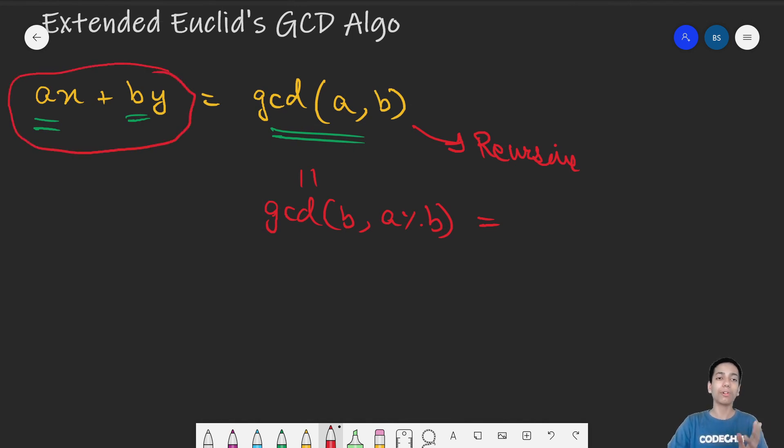It must have something again of this form. This, for your information, is a linear diophantine equation. This is also a GCD of two numbers, so it can be written as BX2 plus A mod B times Y2. This is expressing it in terms of two coefficients of two numbers.